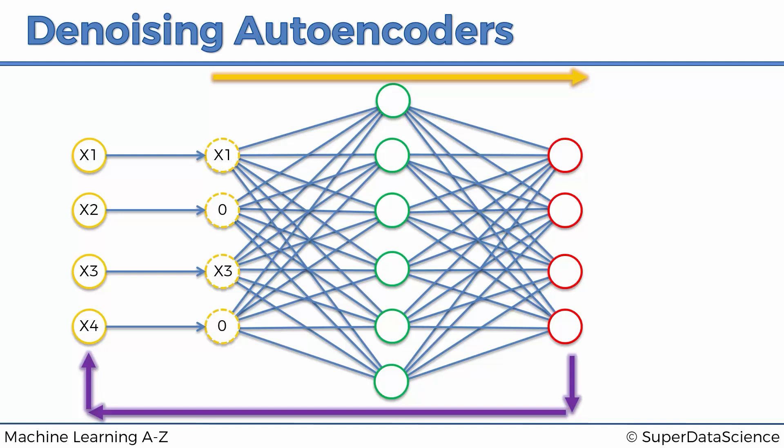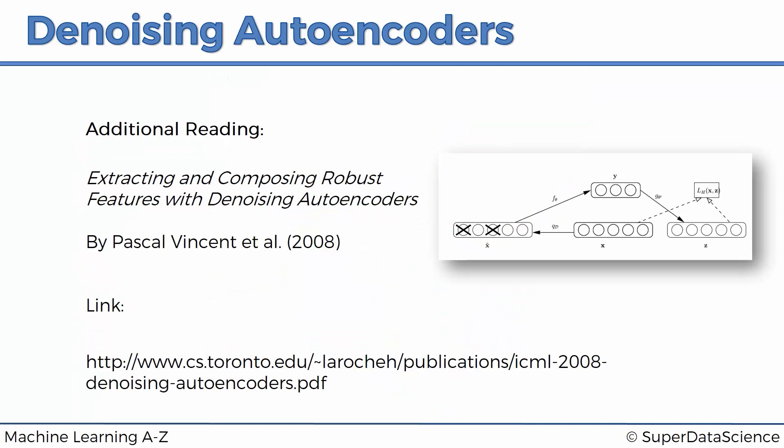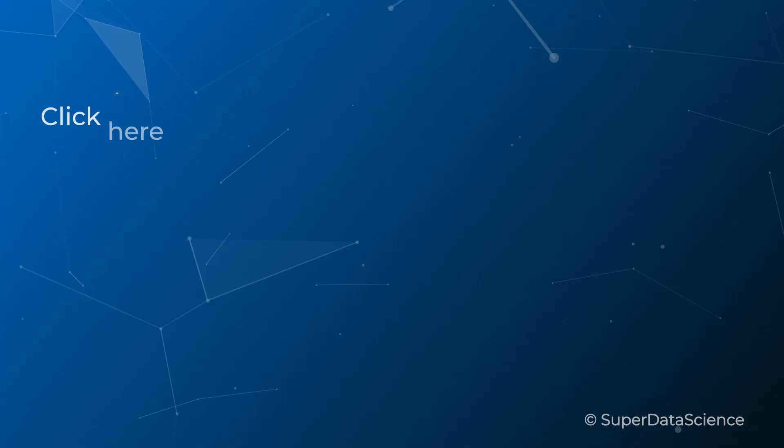And in terms of additional reading, here is a great paper by Pascal Vincent and others, 2008. It's called Extracting and Composing Robust Features with Denoising Autoencoders. Exactly as you can see from the image, exactly what we spoke about.